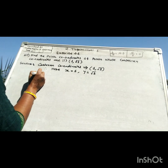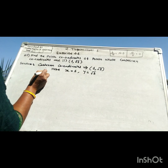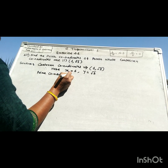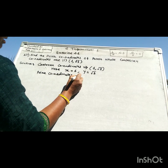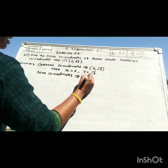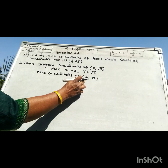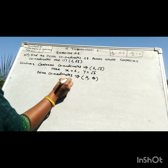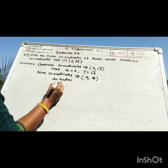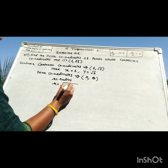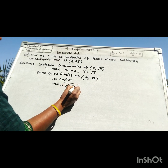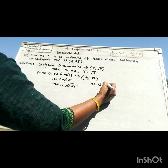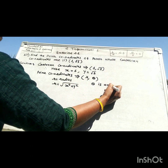Now to find polar coordinates, we need r and theta. Here r is the radius, and r is equal to square root of x squared plus y squared, and theta is an angle.